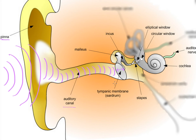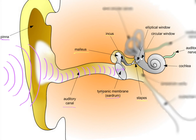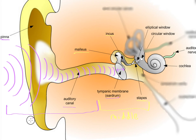The eardrum is connected to a couple of tiny little bones. The first bone is called the malleus, which is connected to the incus, which in turn is connected to the stapes. These three little bones vibrate back and forth at the same frequency as the sound wave. Together, the eardrum, malleus, incus, and stapes make up the middle ear. The outer part — the auditory canal and the pinna — is known as the outer ear.